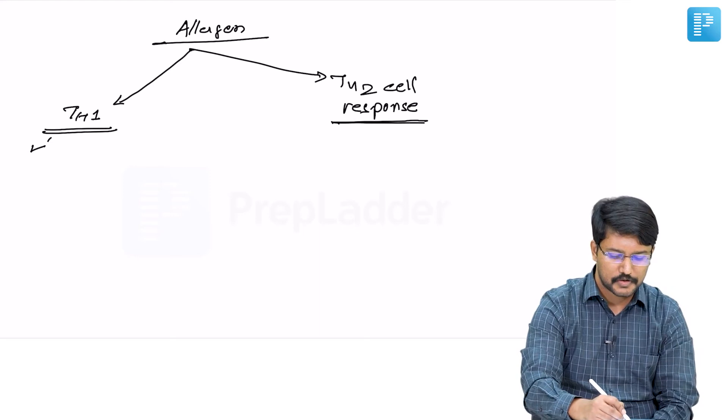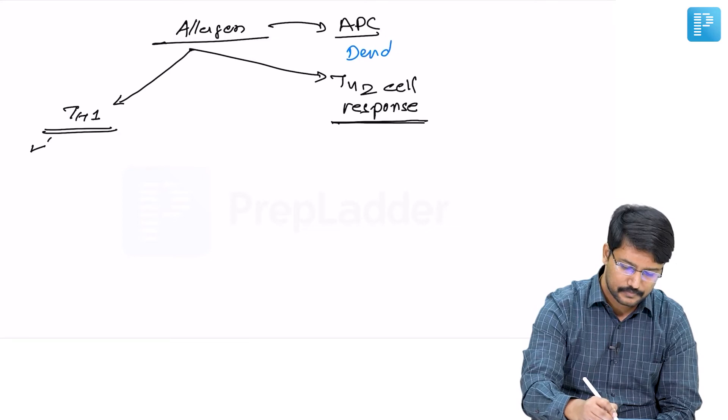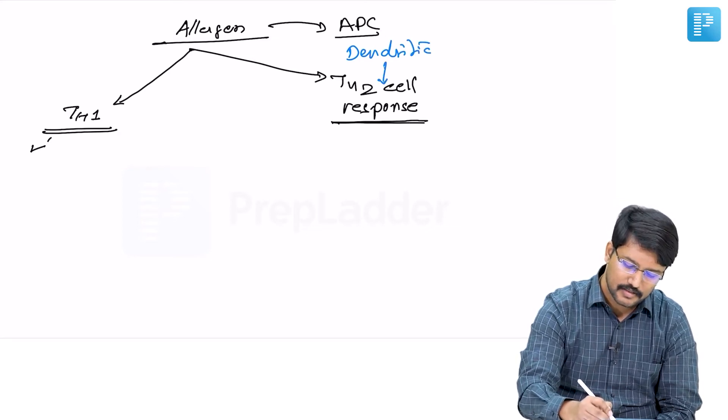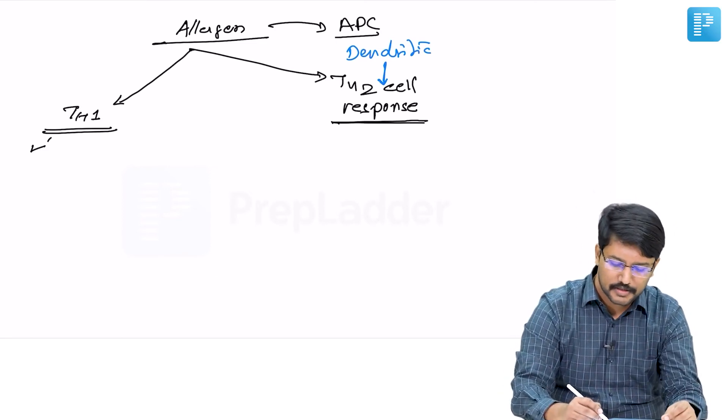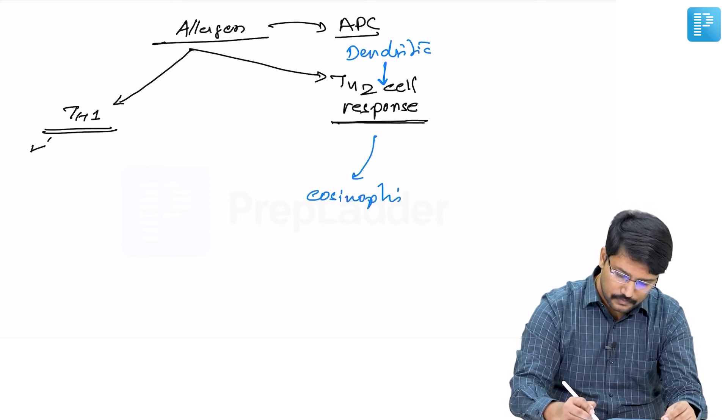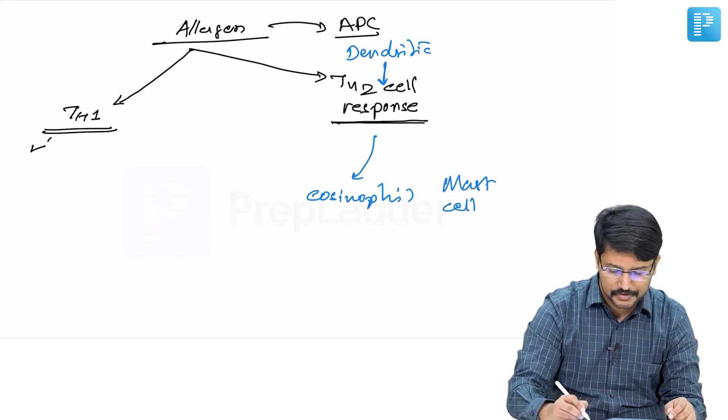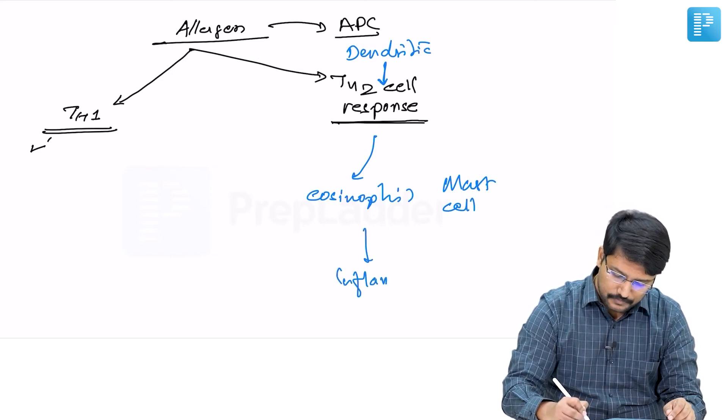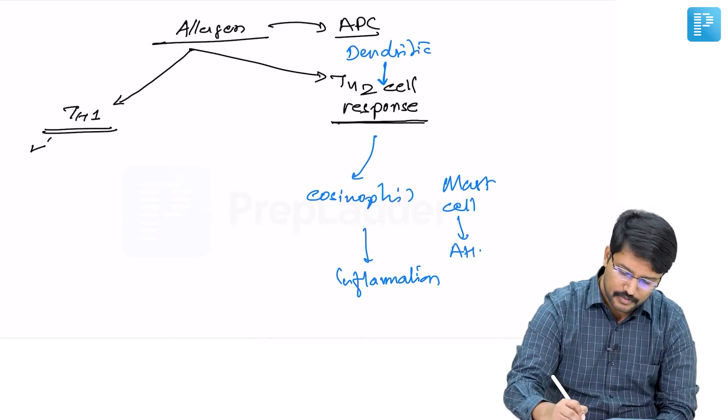The allergen is first presented to the antigen presenting cell, which here is a dendritic cell, which stimulates the Th2 cells. Cytokines produced by Th2 cells lead to eosinophil recruitment and also contribute to mast cell destabilization or activation, leading to inflammation and thereby hyperresponsiveness.